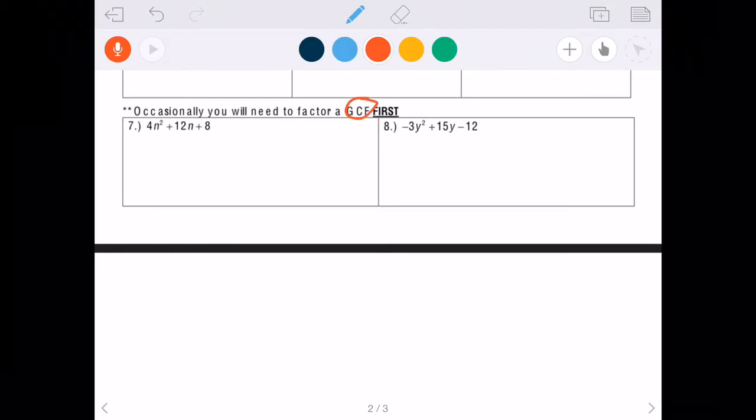And GCF, just a reminder, stands for greatest common factor. So sometimes before we factor, there's going to be something in common with all of the numbers or variables that we could pull out, that we could factor out.